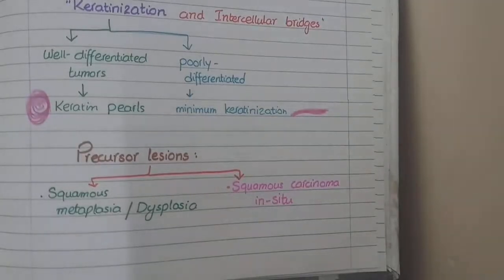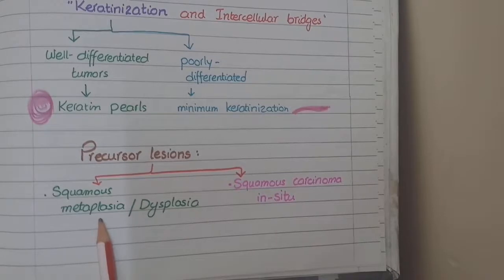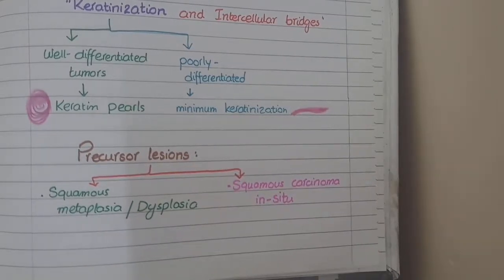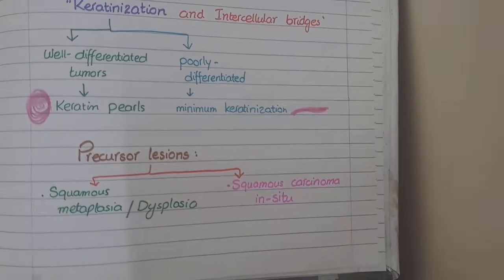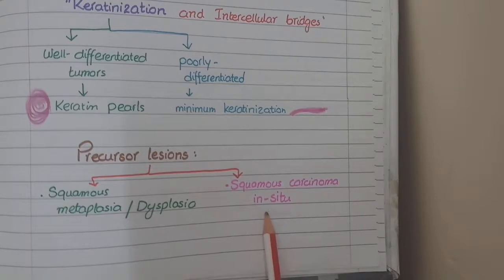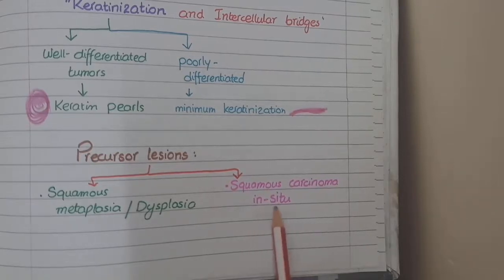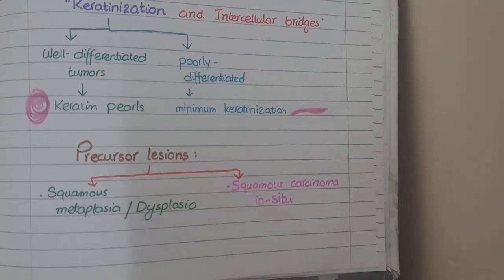Like adenocarcinoma, squamous cell carcinomas also have precursor lesions. The first is squamous metaplasia, in which squamous epithelium starts to develop in the alveoli — normally alveoli have small cuboidal cells, so development of squamous epithelium here is called squamous metaplasia. The second precursor lesion is squamous cell carcinoma in situ, in which cancerous cells of squamous differentiation develop in the alveoli but do not invade the stroma.